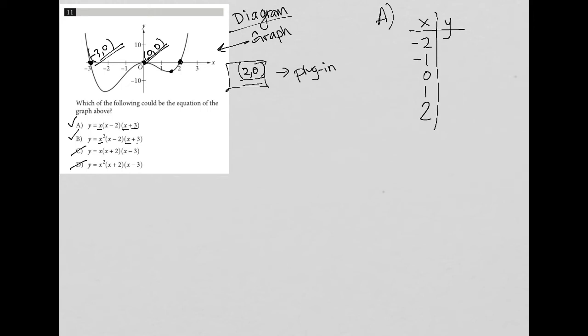So with A, if x were negative 2, I'd have y equals negative 2, parentheses negative 2 minus 2 is negative 4, and then negative 2 plus 3 is positive 1. And it looks like that's all going to be a positive 8, right? Negative 2 times negative 4 is positive 8. So it gives me y equals 8.